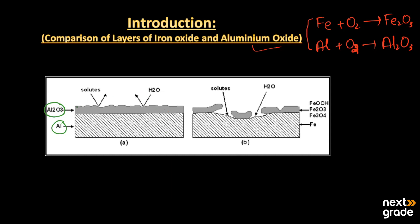Here you can see this is the surface of the aluminum metal. When it comes in contact with oxygen, a layer of aluminum oxide forms over its surface. If we attack that with any type of solute or with water, they will have no effect on this surface because the aluminum oxide layer formed is a very tough layer.